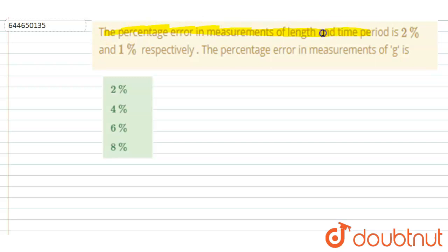measurement of length and time period is 2% and 1% respectively. The percentage error in the measurement of g is? So we know that g equals 10 meter per second squared, and if you see the